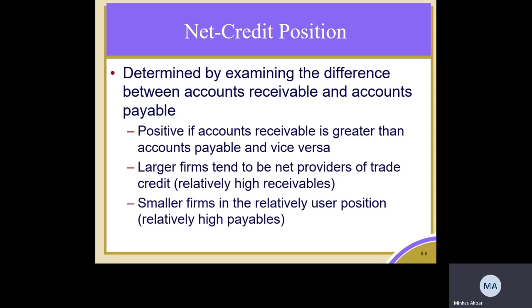On the contrary, smaller firms usually have high payables and low receivables. Because they are small in size, they have less capital available, so most of the time they rely on trade credit. Their net trade credit position would be negative.